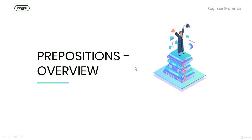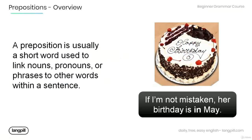Welcome to this tutorial. Today we're going to talk about prepositions — an overview. A preposition is usually a short word used to link nouns, pronouns, or phrases to other words within the sentence. Have a look at the example: if I'm not mistaken, her birthday is in May. The preposition 'in' is used to link the